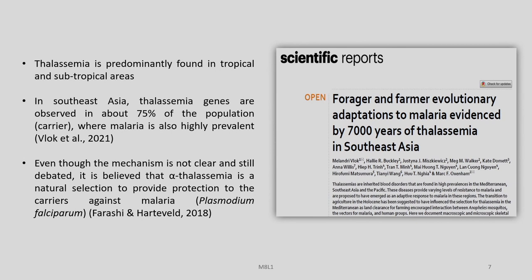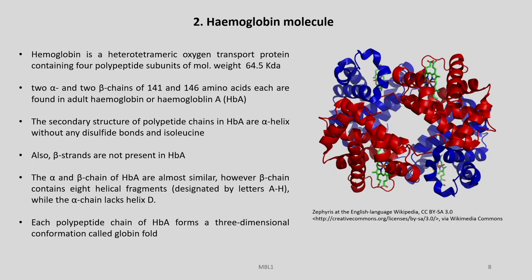It is predominantly found in tropical and subtropical areas. In Southeast Asia, thalassemia genes are observed in about 75% of the population, and they are carriers where malaria is also highly prevalent. Even though the mechanism is not clear and still debated, it is believed that alpha thalassemia is a natural selection to provide protection to the carriers against malaria. A paper in Scientific Reports reports about forager and farmer evolutionary adaptations to malaria evidenced by 7000 years of thalassemia in South Asia.